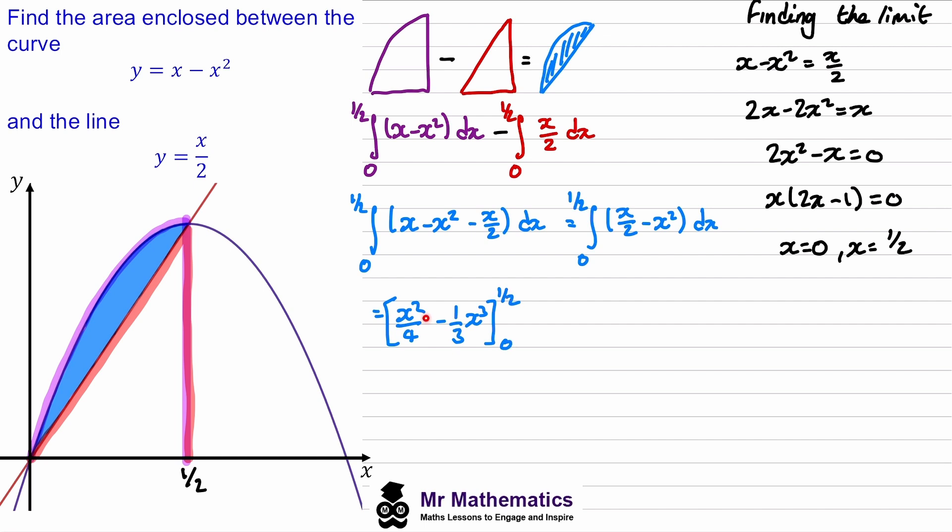We'll substitute in the half. This will be a half squared divided by 4, so 1 over 16, then a half cubed divided by 3, so 1 over 24. When we substitute in the lower limit 0 we get 0. So this will give us an area of 1 over 48 units squared.